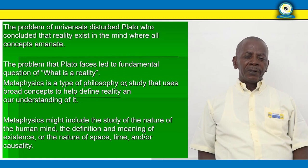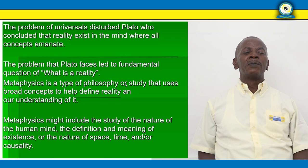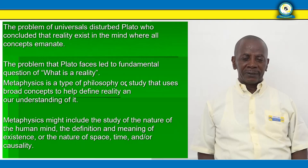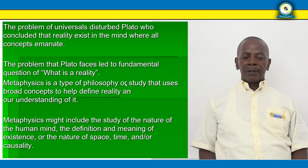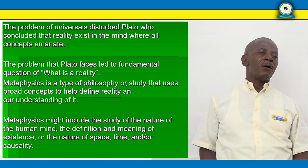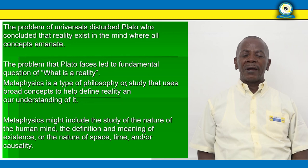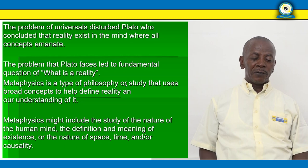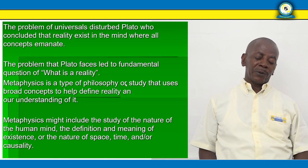The study of the universe and how nature was has been studied from a very long time by most philosophers, like Plato. Plato studied the problems of the universe — this disturbed him — and he concluded that reality exists in the mind, where all concepts emanate. The problem Plato faced led to the fundamental question: what is reality? Therefore, metaphysics is the type of philosophy that uses broad concepts to help define reality and must include the study of the nature of humankind, the definition and meaning of existence, the nature of space, time, and causality.